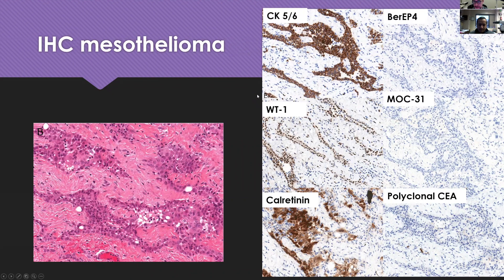These are some histology images as well as immunohistochemistry. On the left, we have the classic features of an epithelioid type of mesothelioma — epithelial-appearing cells that are invasive into the surrounding tissue. They can in some cases have more tubular or papillary structures, but here they're more sheet-like infiltrative growth. The important differential is we have to prove this is not a carcinoma, and you really need to do the immunohistochemistry to prove that this is of mesothelial origin.